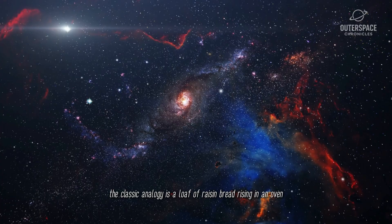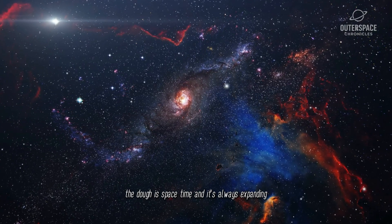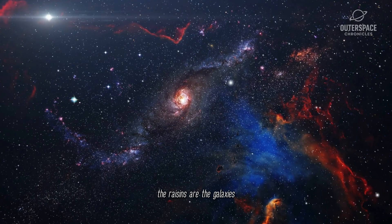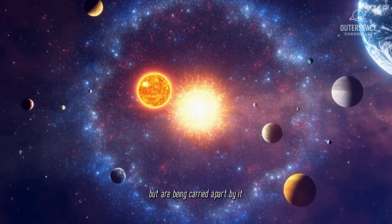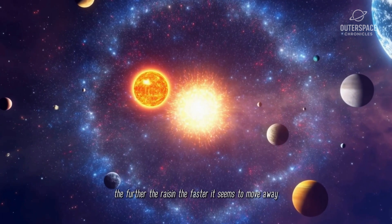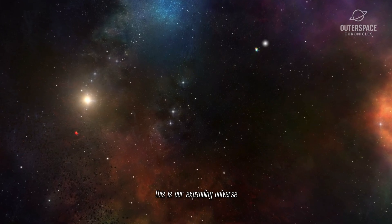The classic analogy is a loaf of raisin bread rising in an oven. The dough is space-time, and it's always expanding. The raisins are the galaxies, and they aren't moving through the dough, but are being carried apart by it. The farther the raisin, the faster it seems to move away. This is our expanding universe.